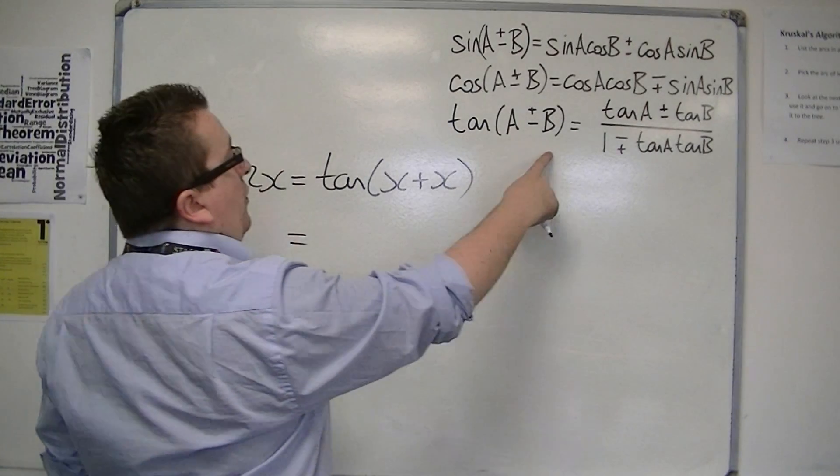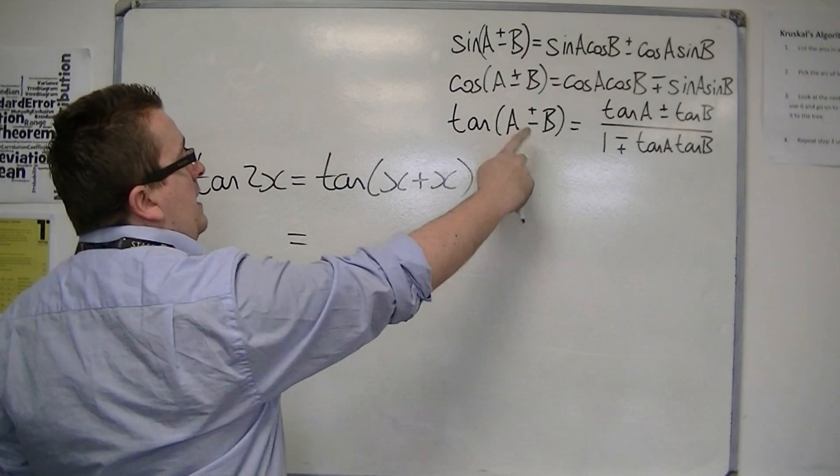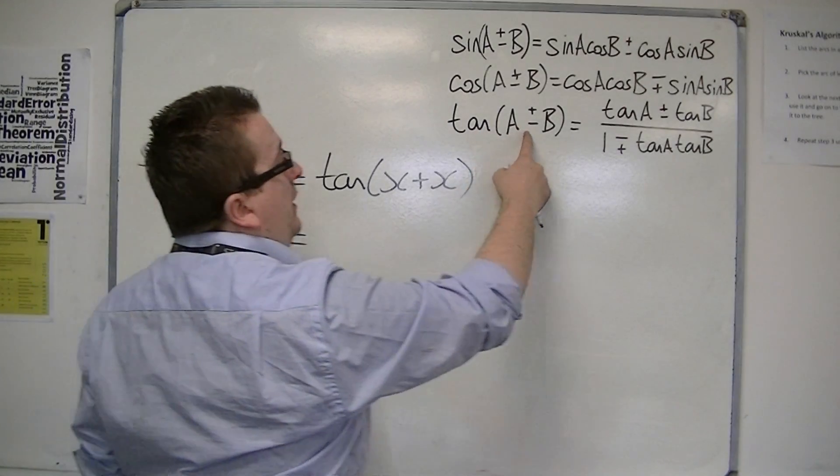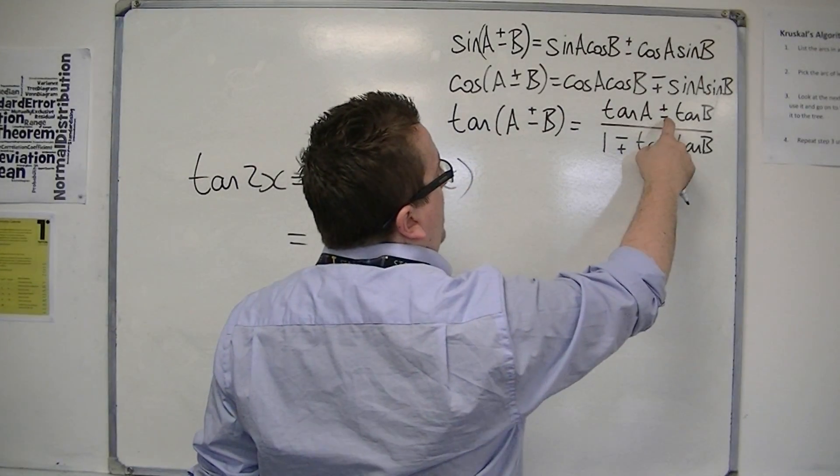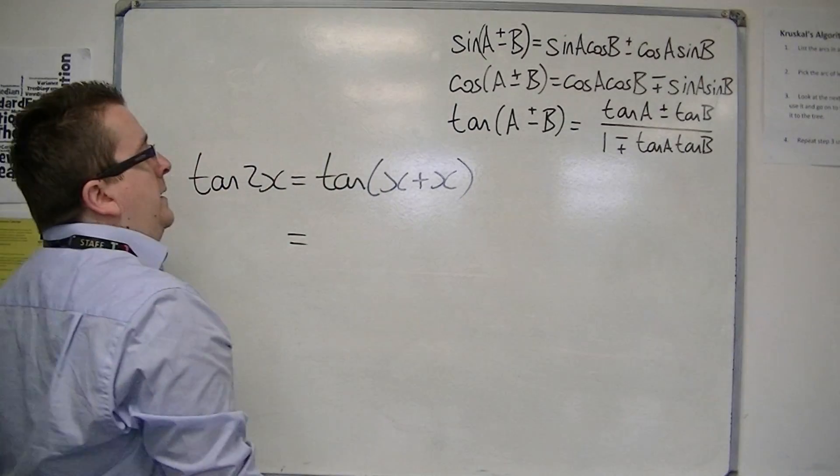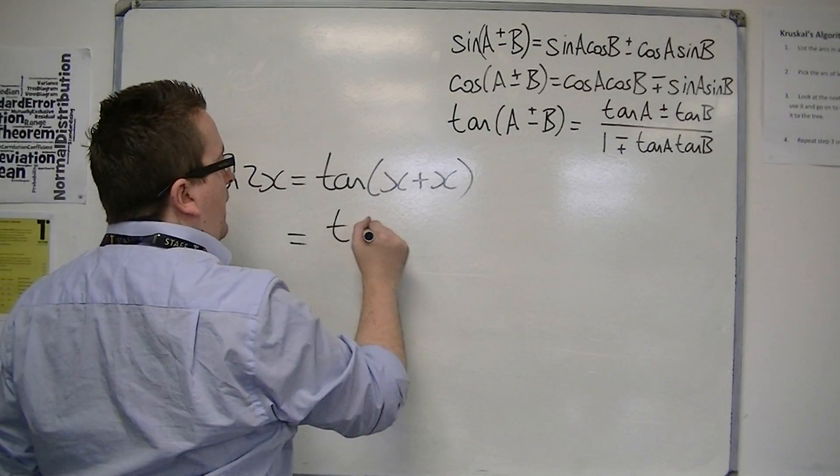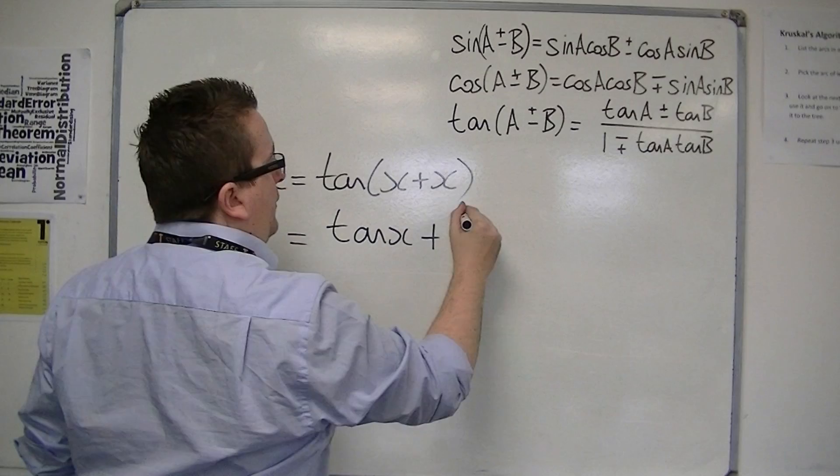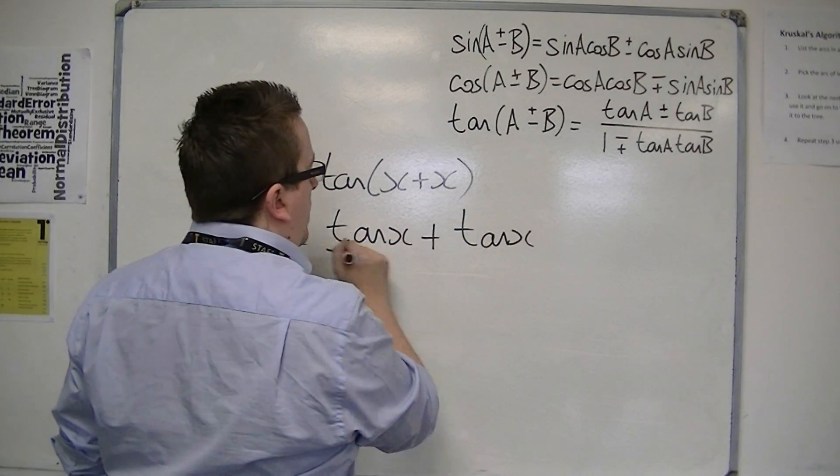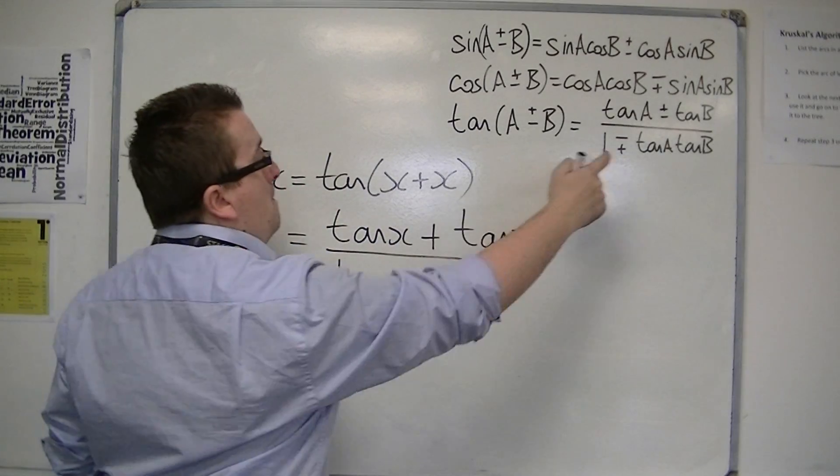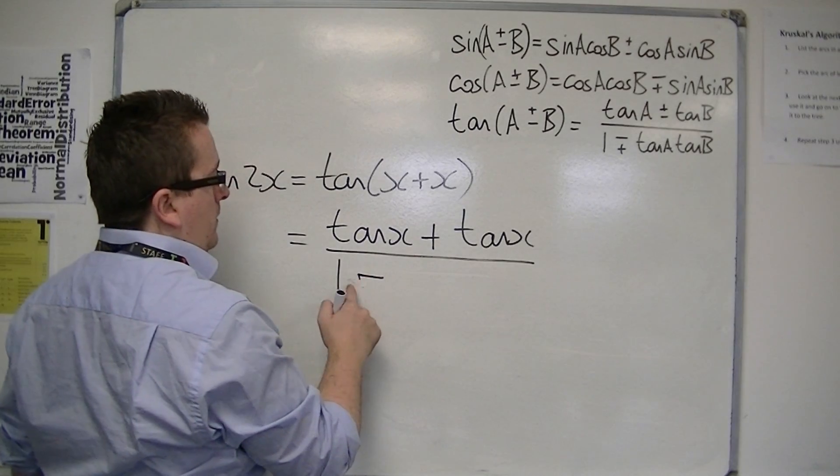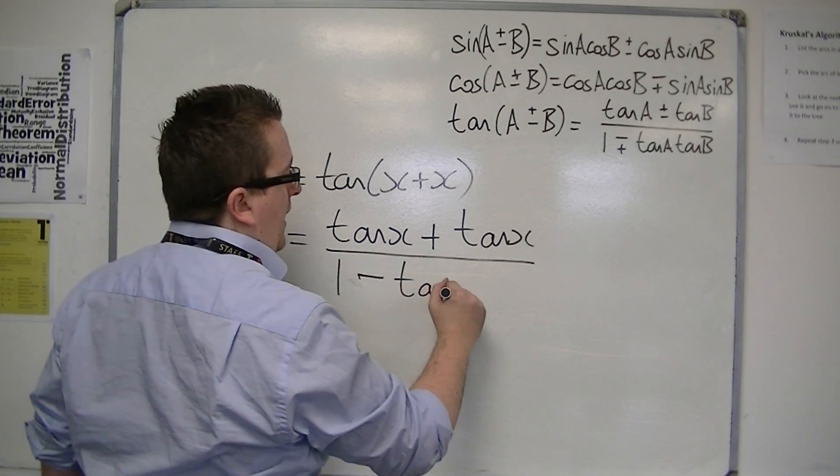So I'm going to use the third formula here, with a and b as x, and this is a plus. So if that's a plus, that's a plus, and that's a minus. So I've got tan of x plus tan of x, all over 1 minus tan x tan x.